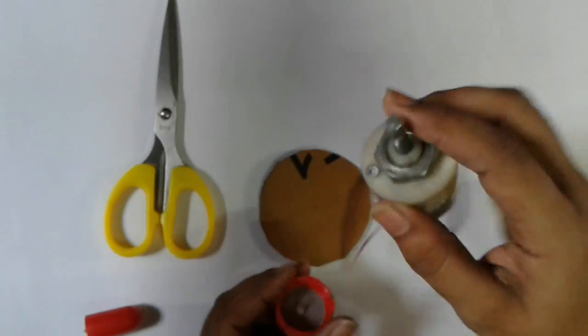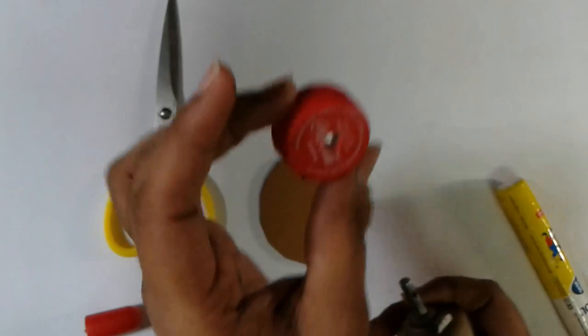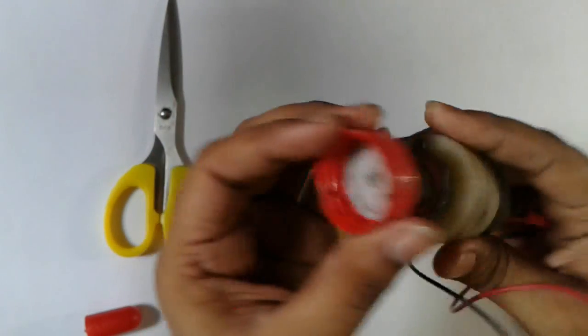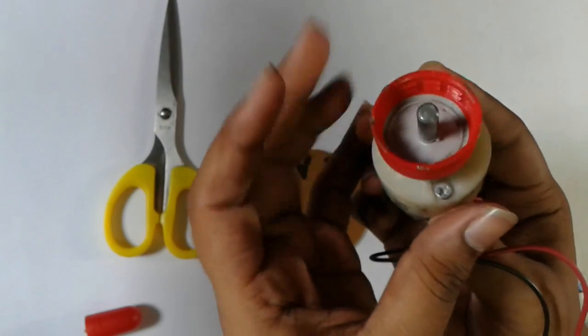Now we need to attach the shaft to here, so that I use a bottle cap so that I make a hole at that so that the shaft is tightly fit to that position.